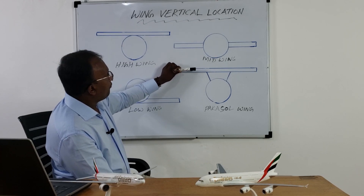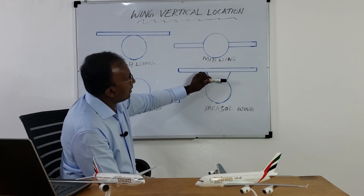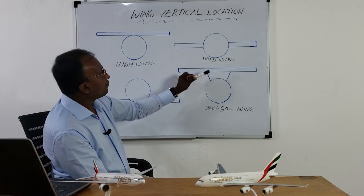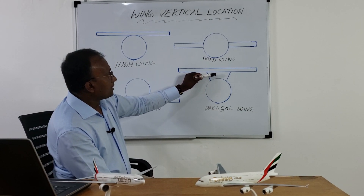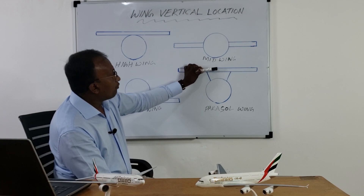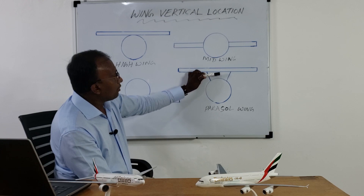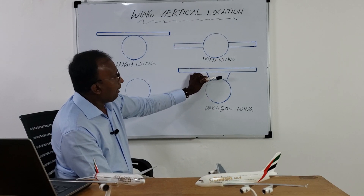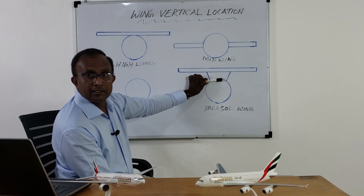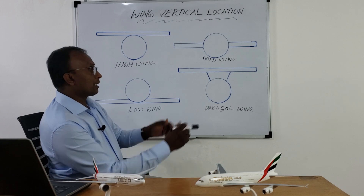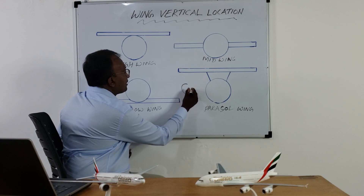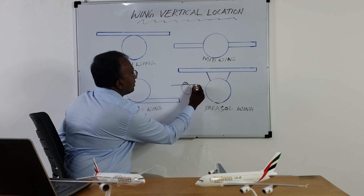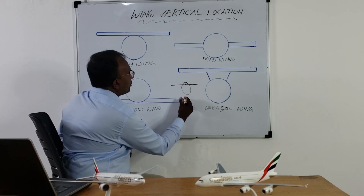If the wing is attached above the fuselage with support, it is called a parasol wing. There is one more type similar to this, but the wing is not at the very top of the fuselage — it is a little lower. That is called a shoulder wing. The fuselage is like this and the wing is attached like this — so this is called a shoulder wing.